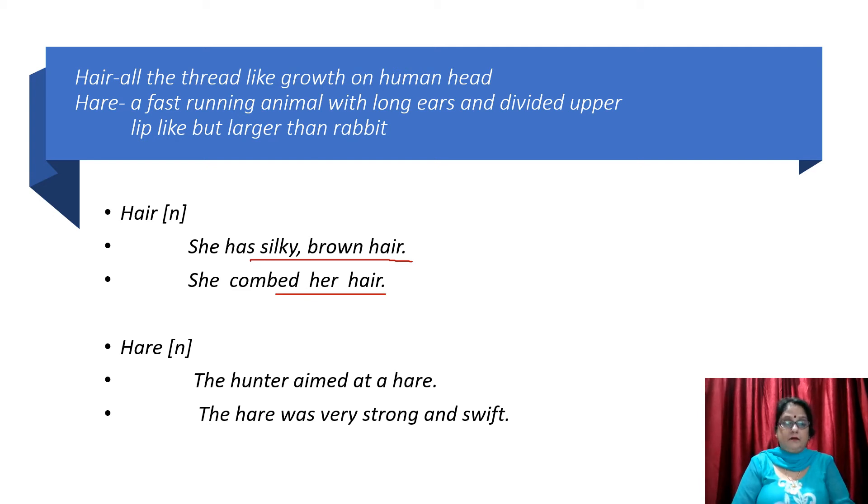Now, hare. Hare is also noun. Yeh bhi ek sangya hai. Let's use this also in sentence. The hunter aimed at a hare. So, hunter ne kya kiya? Ek khargoosh ki taraf apna nishana sadha tha. He aimed at a hare. The hare was very strong and swift.